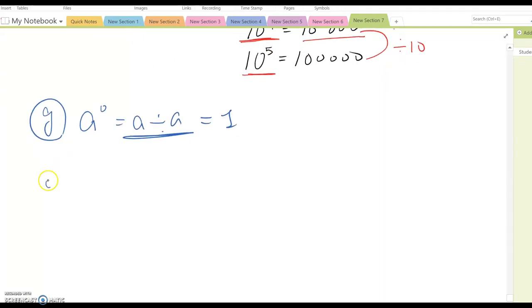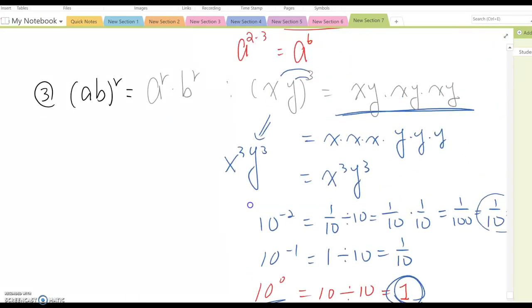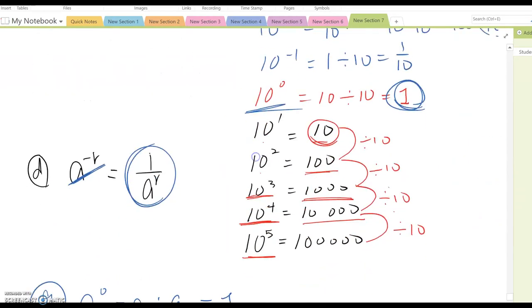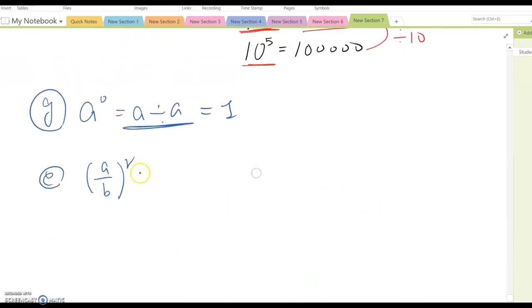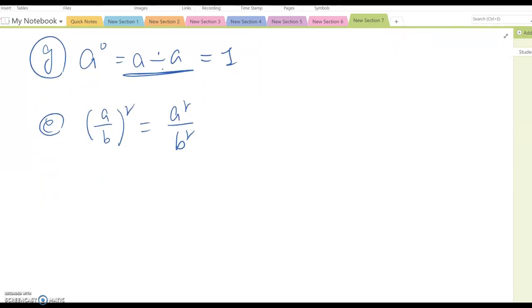Okay? Then, now, property E, which is A over B to the R. So, it is similar to property C. So, it becomes A to the R over B to the R.